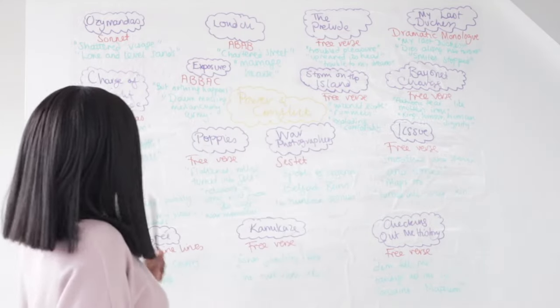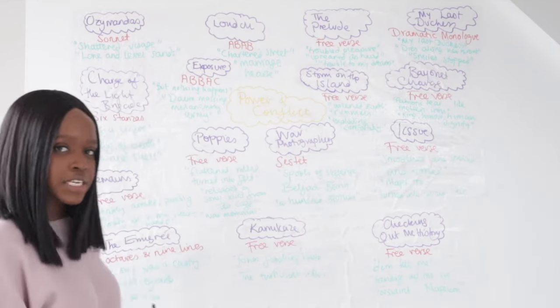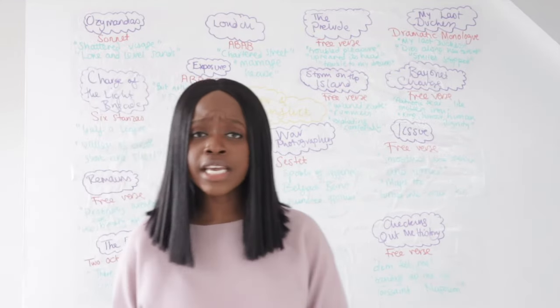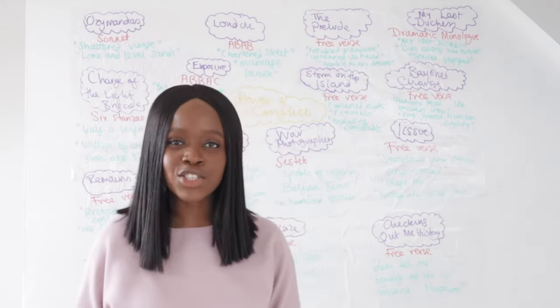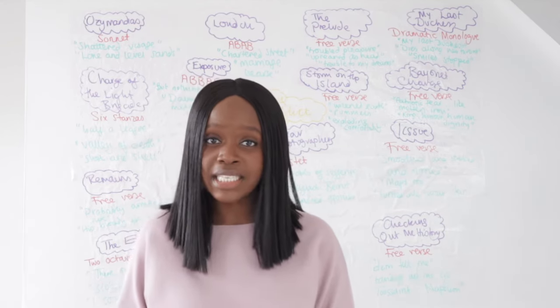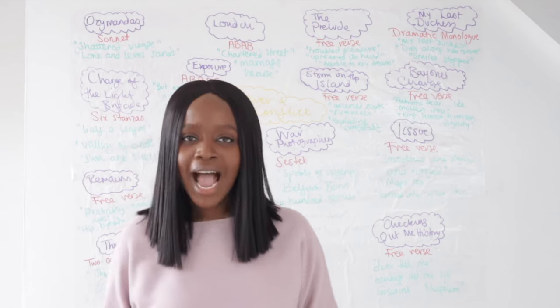Let's get started with the first poem in this collection: Ozymandias. The first thing to always remember is that it's written in sonnet form. Traditionally a sonnet is a love poem, 14 lines in length, and Percy Shelley has used this as a way to mock the subject of this poem. Ozymandias is written about King Rameses II, and the sonnet is written in a very ironic sense.